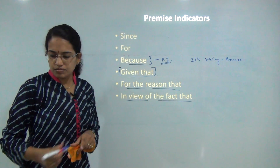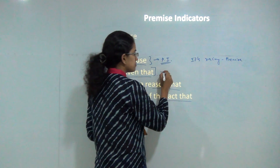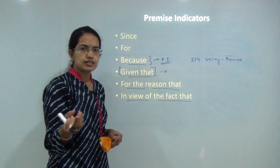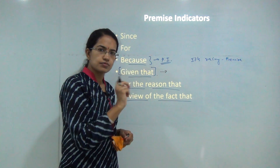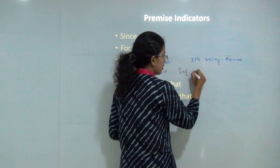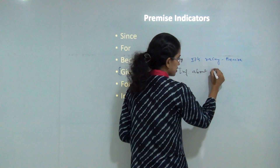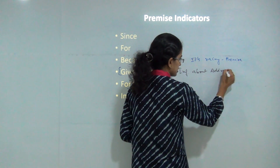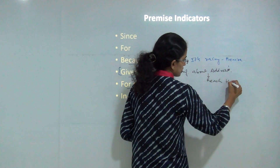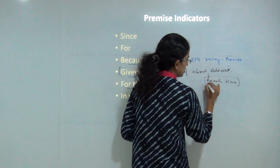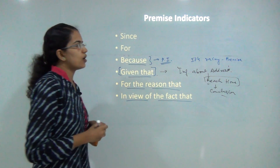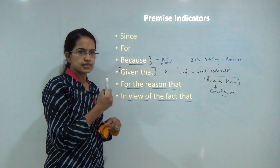Another example: 'I can come to your house given that you provide me sufficient information about your address.' If I have the information about your address, I can come to your house. So 'given that you provide me information about address' becomes the premise, and reaching your home would be the conclusion. This is how we work with premise indicators.